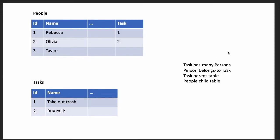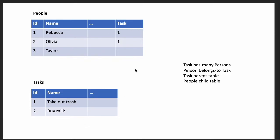If the key field is on the people table, then we say that the task has many persons, because both Rebecca and Olivia could take out the trash, and therefore that task has many persons associated with it — and the person belongs to the task. Both of these scenarios are equally valid; neither is right or wrong.